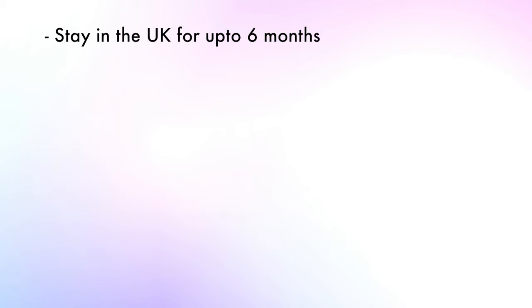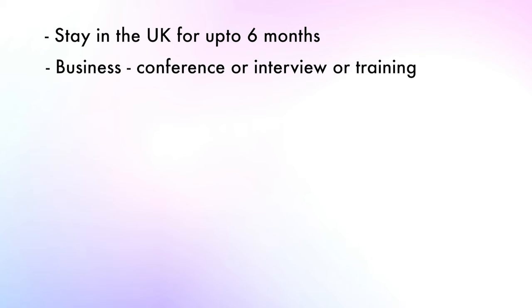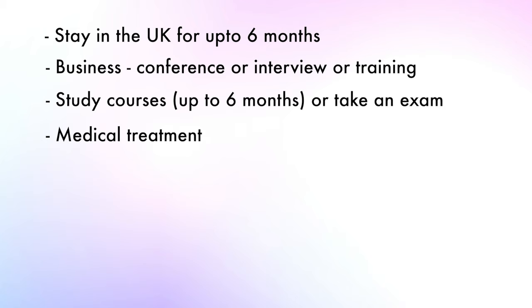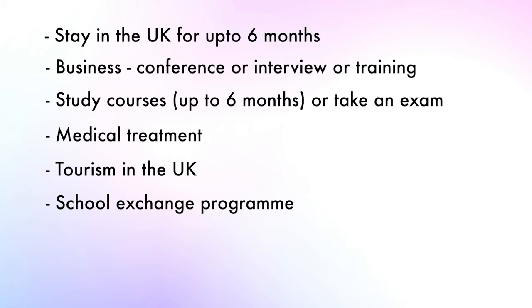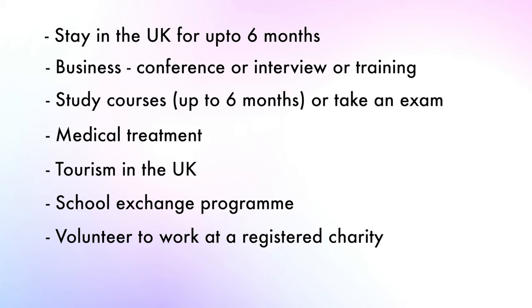When you come to the UK, there is an entire list of things you can and cannot do. A visitor visa will allow you to stay for up to six months and lets you do things like attend conferences, give an interview, or receive training. You can study courses up to six months or take an exam, get medical treatment, visit as a tourist, take part in a school exchange program, volunteer at a registered charity for 30 days, or pass through to another country.